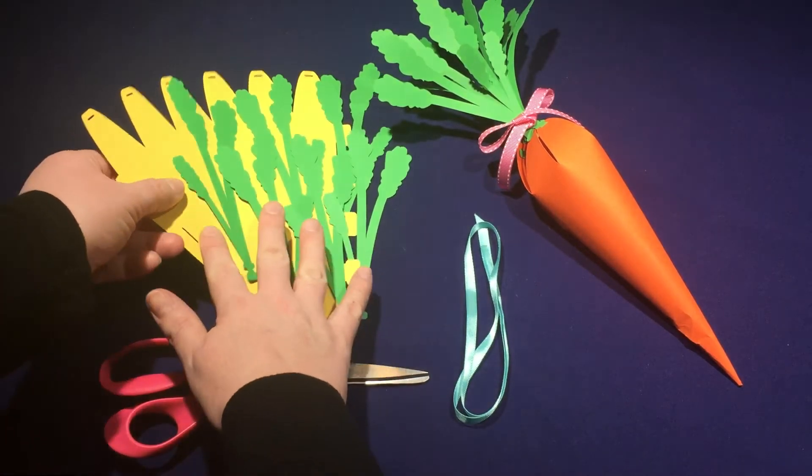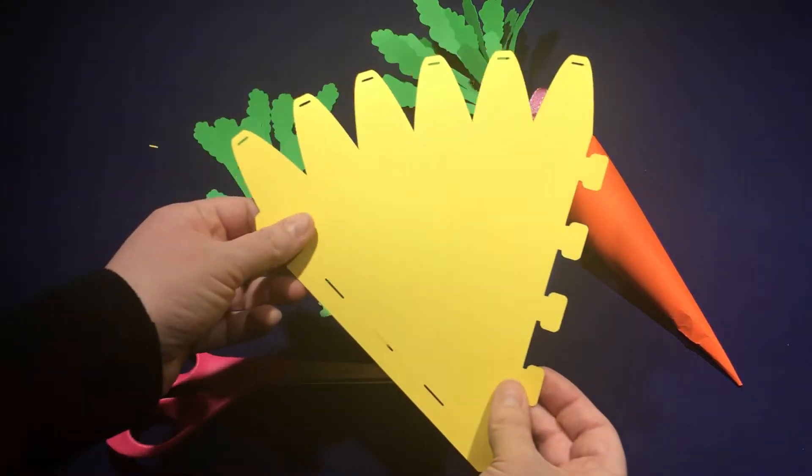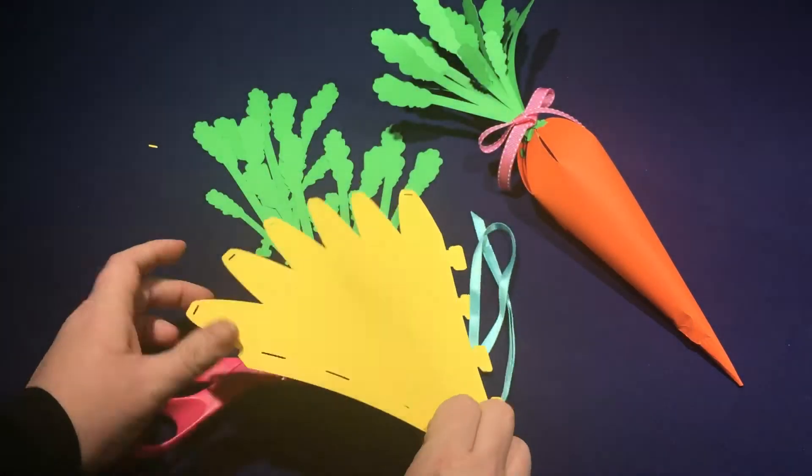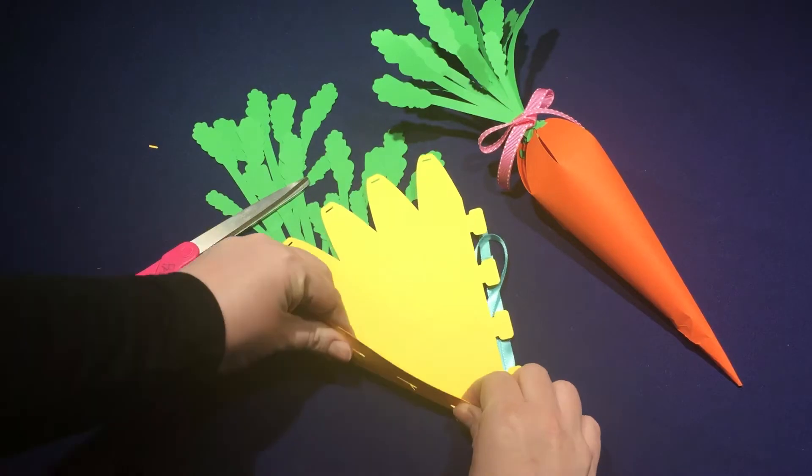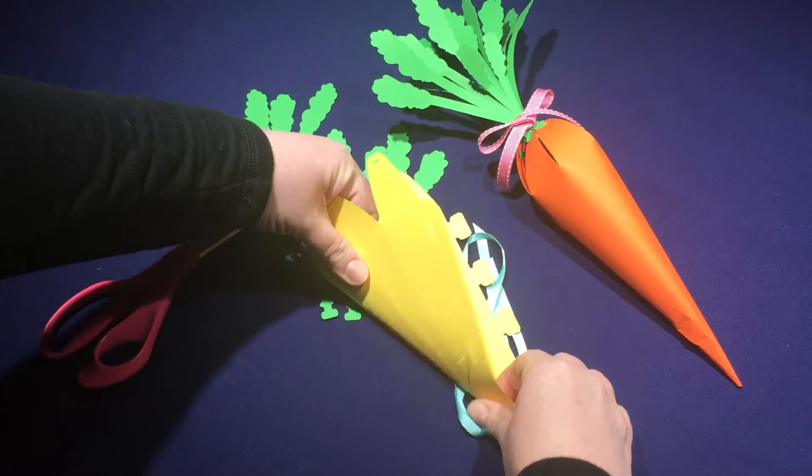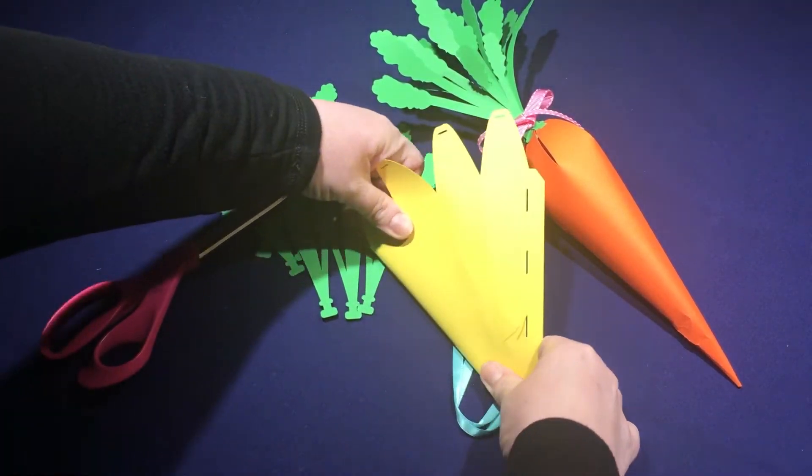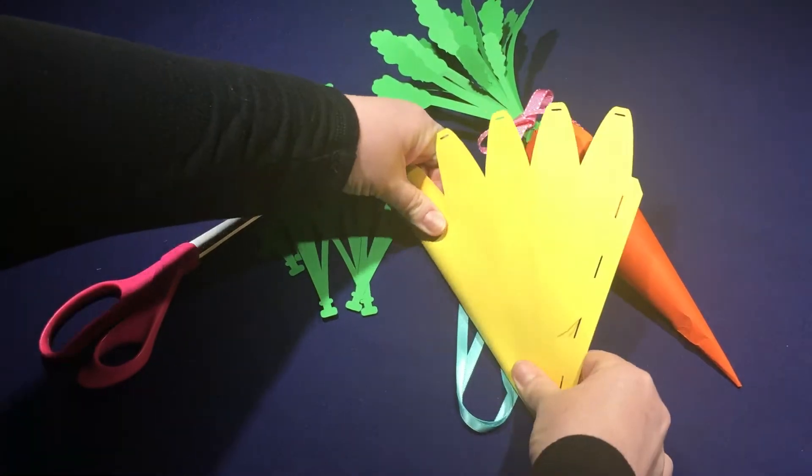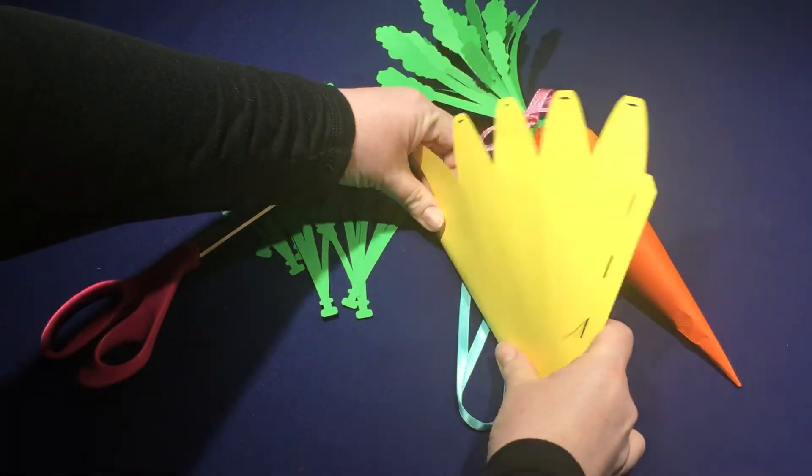You want to start off with your big yellow piece, and we're going to basically make a cone out of this. So I start by rolling it and getting some creases in there going around. You don't want to do hard creases, just a gentle rolling motion should do the trick.